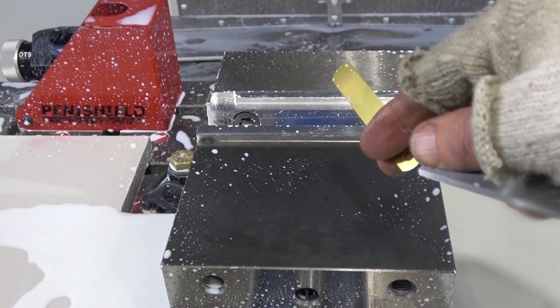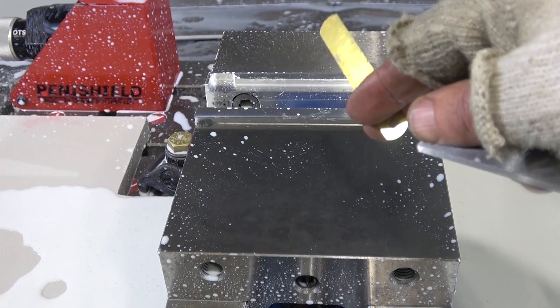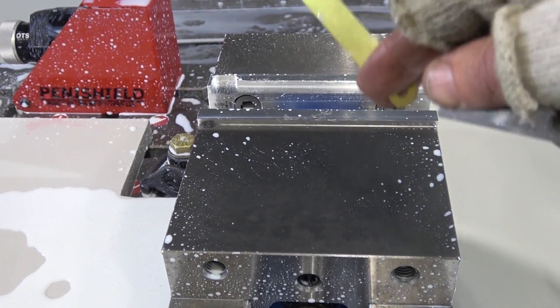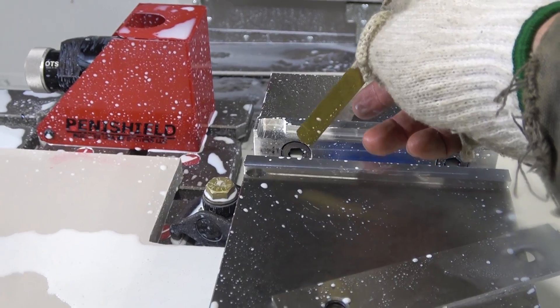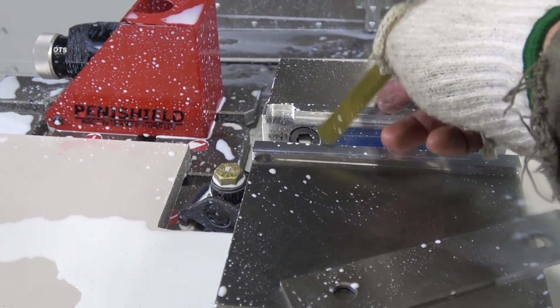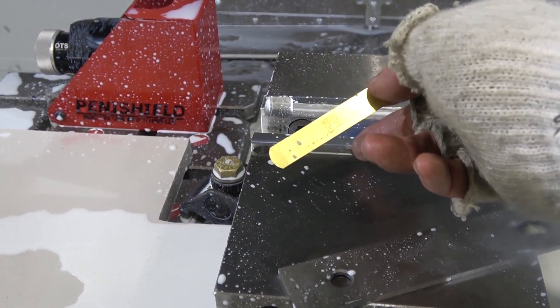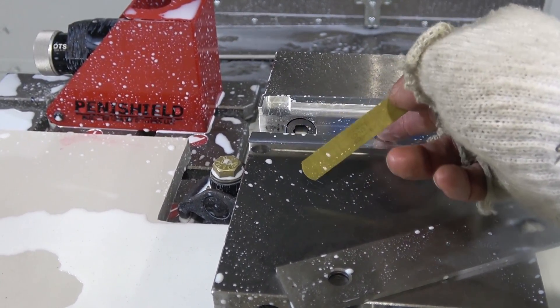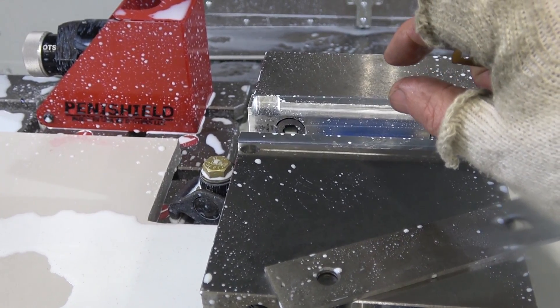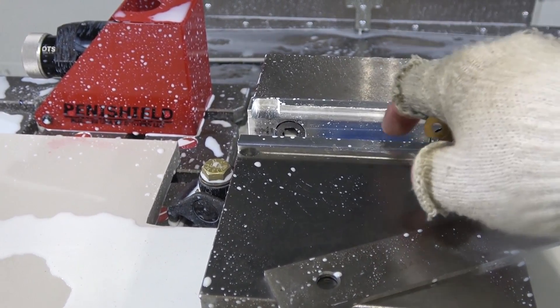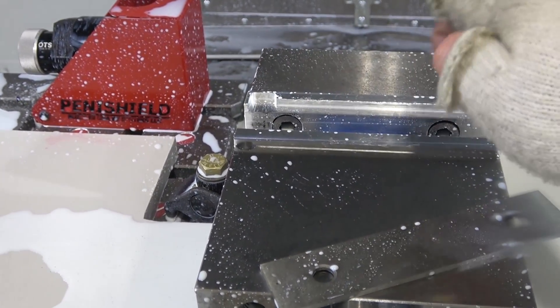What that two and three thou is going to do is leave us some meat there for the lead to stick so we're not down to the bare copper. We're going to leave three thou material lead on this jaw and we'll leave three thou of lead on this jaw and then two thou top to bottom. So on the bottom jaw, it will be leaded as well.